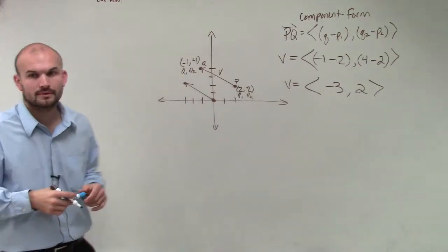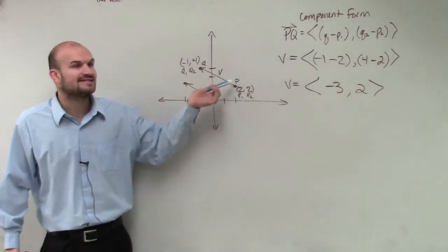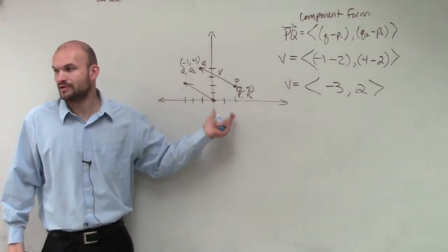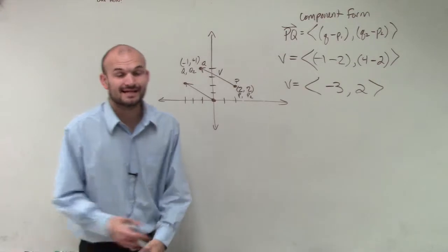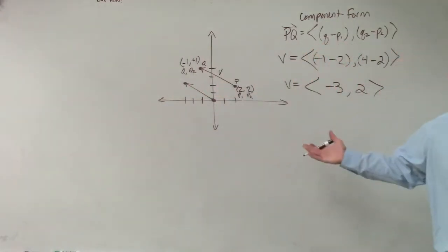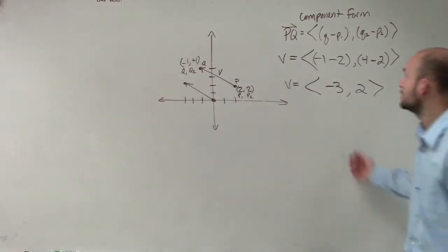So now I've kind of standardized this by putting it into component form. Now the next thing is it says to find the magnitude. So now I need to find the value or the distance of this directional line segment.